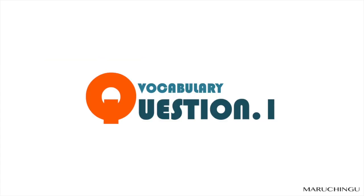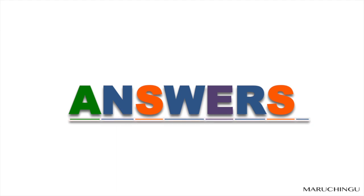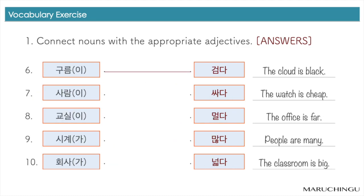Vocabulary Practice. Question 1: Connect nouns with appropriate adjectives. 1. 영화가 재미있다. 2. 날씨가 쌀쌀하다. 3. 레몬이 시다. 4. 강이 깊다. 5. 바지가 길다. 6. 구름이 검다. 7. 사람이 많다. 8. 교실이 넓다. 9. 시계가 싸다. 10. 회사가 멀다.